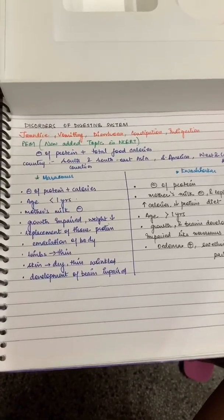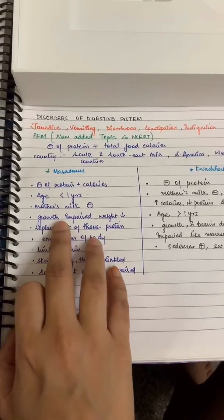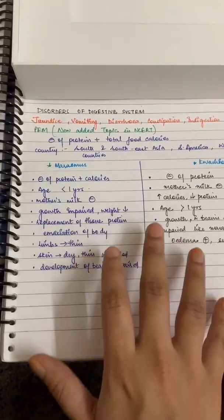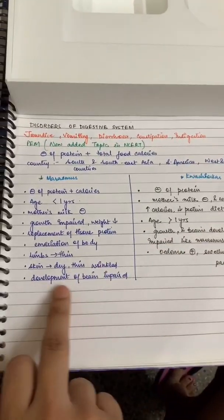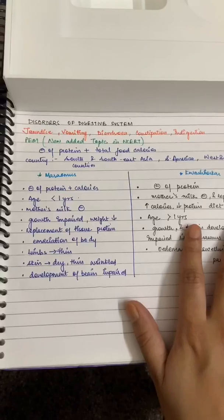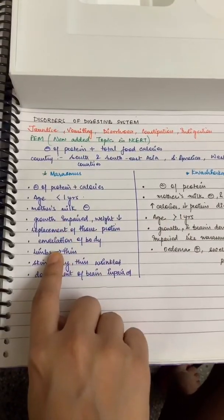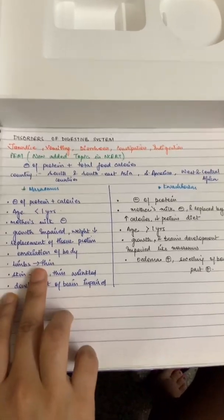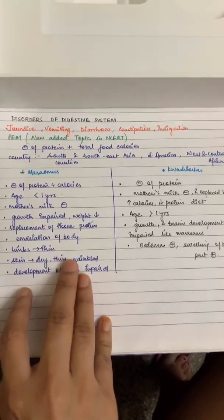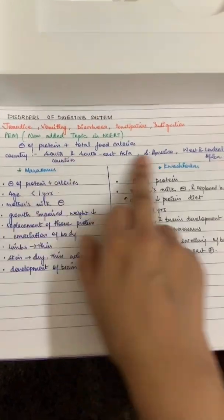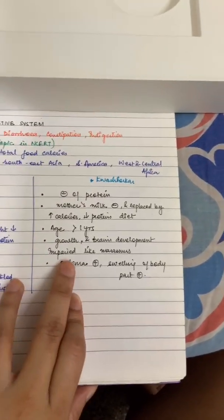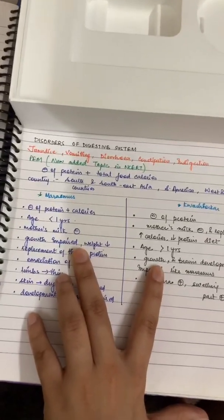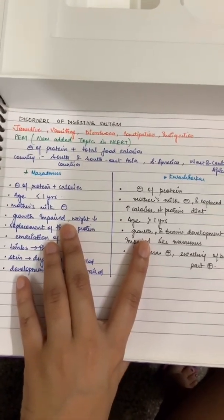In both conditions, there is growth impairment and considerable weight loss, and mental development is also impaired. In Marasmus, the limbs become very dry, and the skin is dry and wrinkled. But in Kwashiorkor, some fat is deposited under the skin and some body parts show swelling. Remember these differences carefully — questions come from this, and if you don't study properly you will get confused.